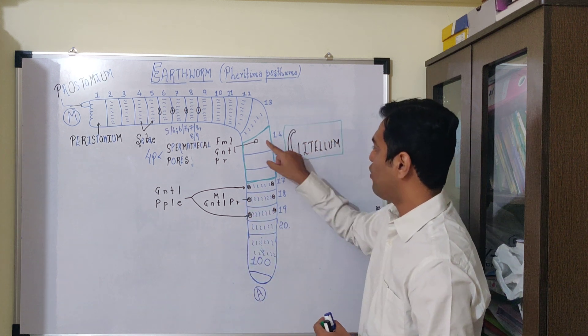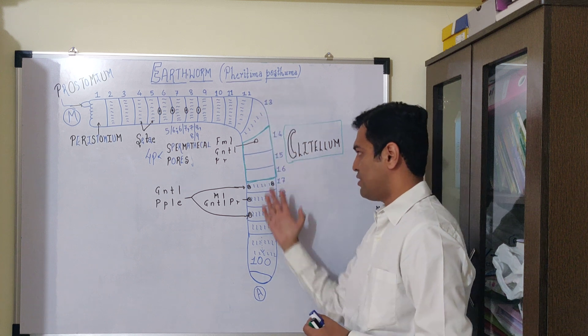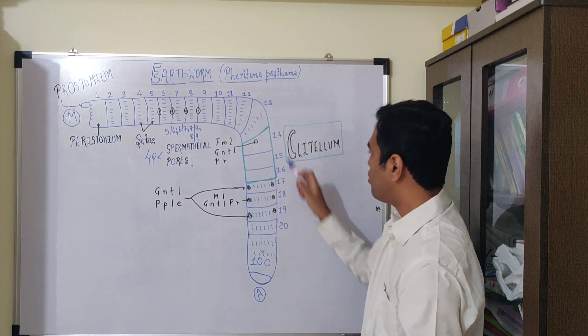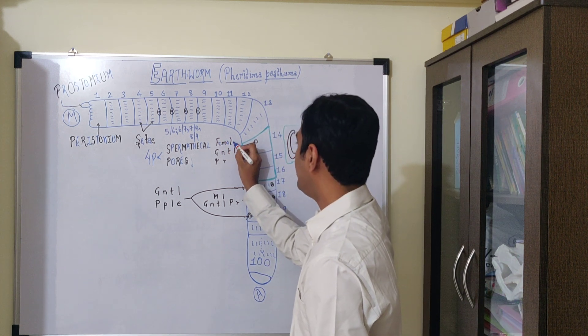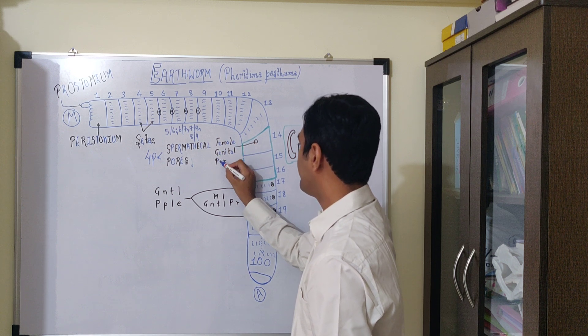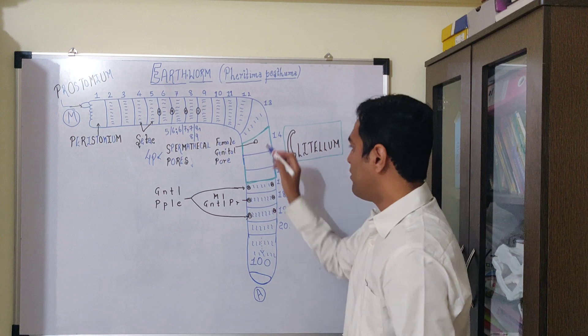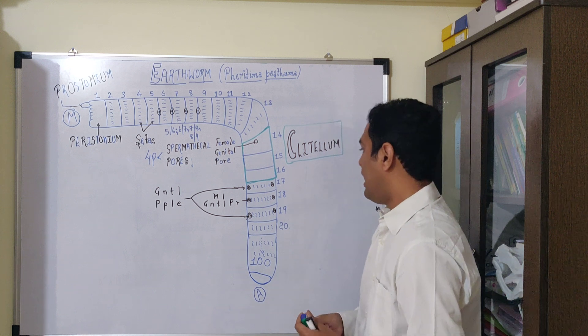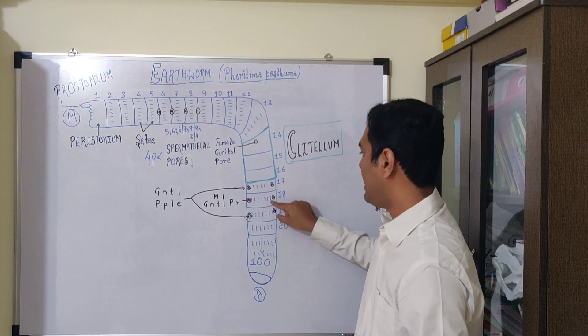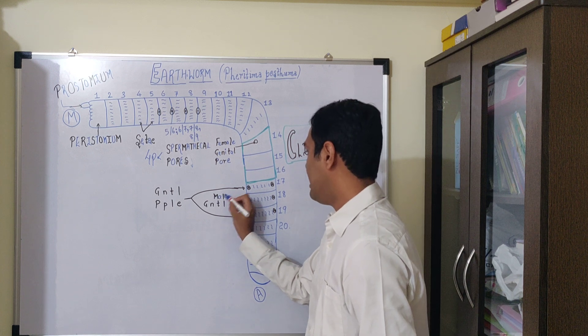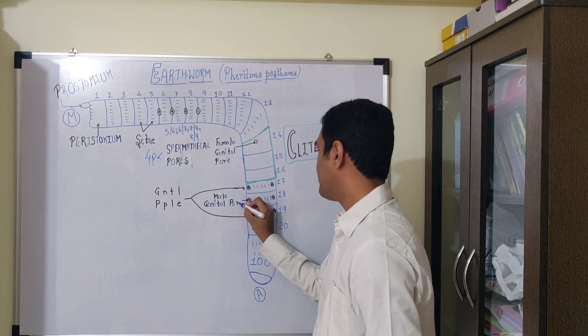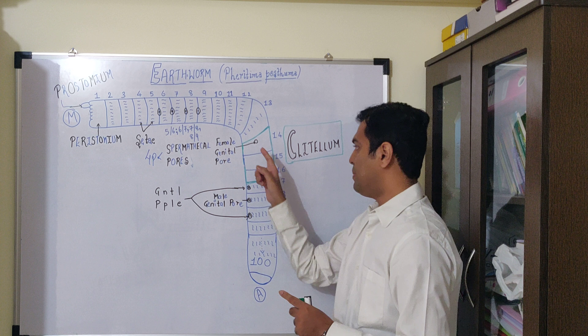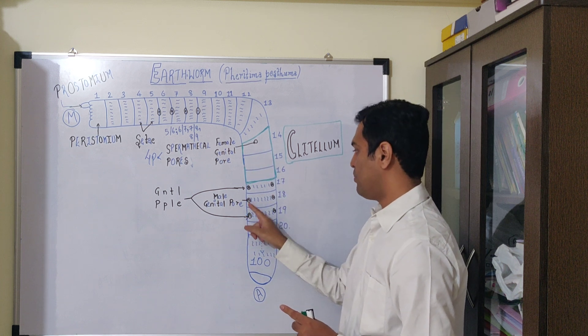On the 14th segment on the ventral surface facing the ground, there is a female genital pore. This helps in release of ova and is a single opening. On the 18th segment are pair of openings, the male genital pores. Female pore is unpaired but male genital pore is paired.